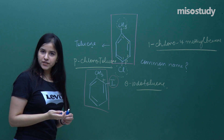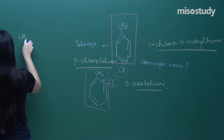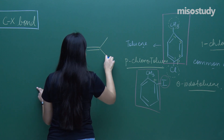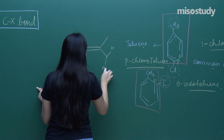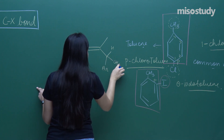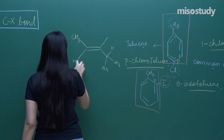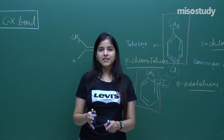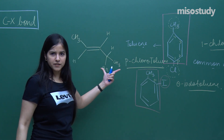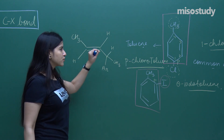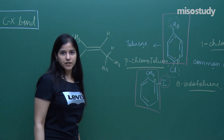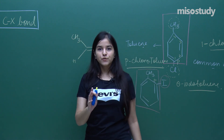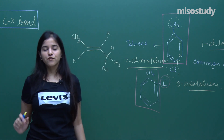Now let me ask you a question related to nomenclature again. You need to find out the IUPAC name for this particular compound — no need to go into the common name because there is no such common name; I have randomly formed this compound. The first and foremost approach over here will be: you can see there is a bond line structure, so I need to convert this bond line structure into the structural formula.